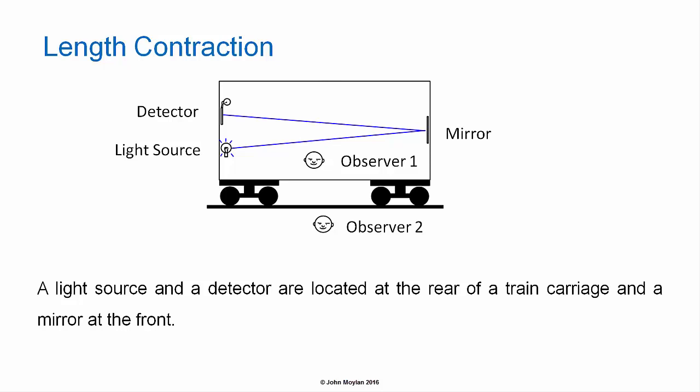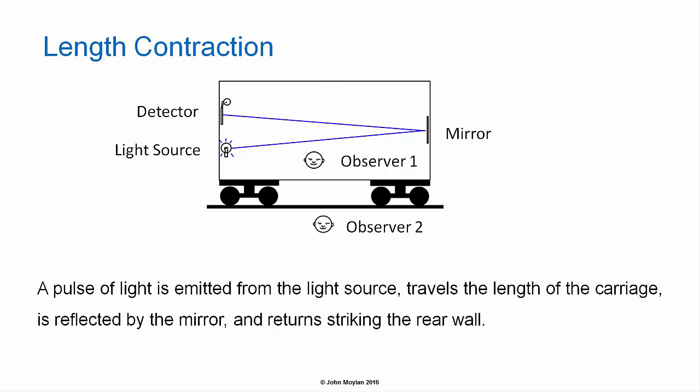A light source and a detector are located at the rear of a train carriage and a mirror at the front. A pulse of light is emitted from the light source, travels the length of the carriage, is reflected back by the mirror, and returns striking the rear wall. The two beams of light are shown separate in the image for clarity, but in the thought experiment imagine them as travelling along the same path in both directions.